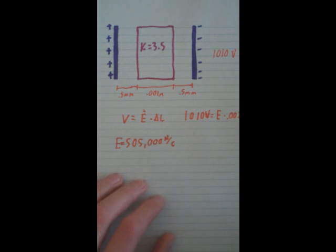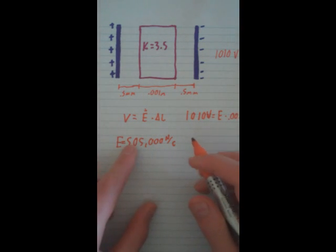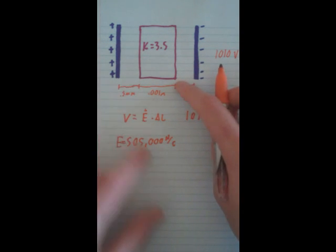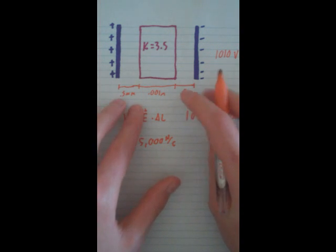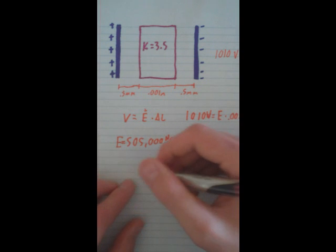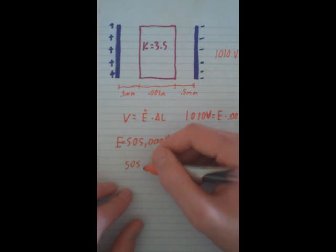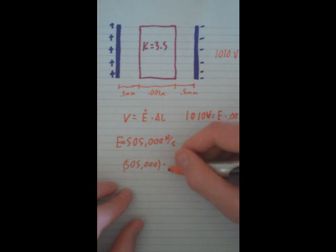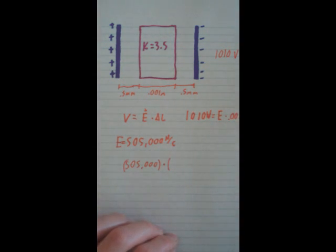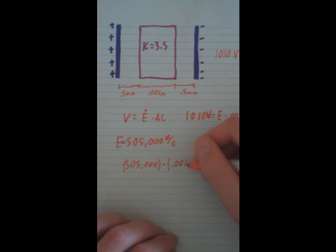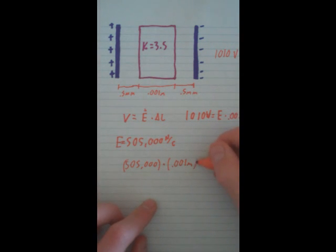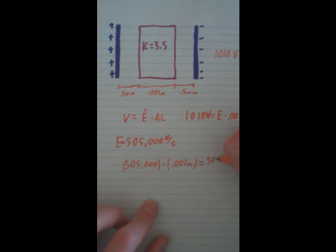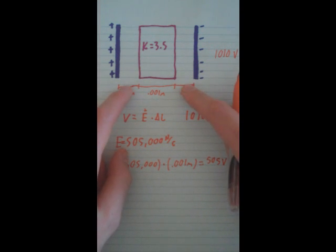That gives us 505,000 — a huge electric field. With this we can find the voltage drop for these two air gap points. We can just add them up since they're on the same axis. So: 550,000, which is our electric field, times 0.001 meter, because that's what the two air regions add up to. And that will equal 505 volts.